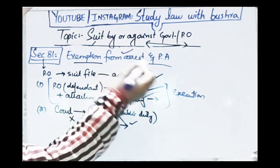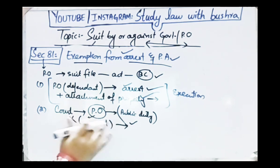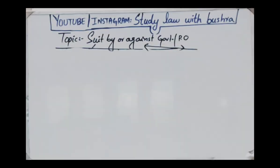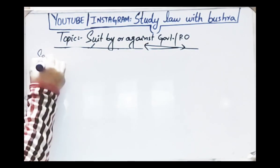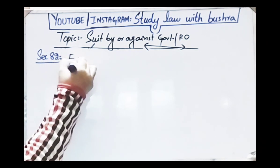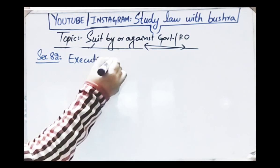So section 81 discusses two things: if the public officer committed an act in his official capacity and a suit was filed, he is exempted from arrest and attachment of property, and also from personal appearance. But during execution of the decree, he is not exempted.